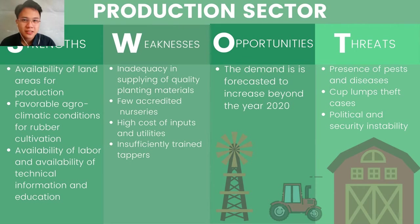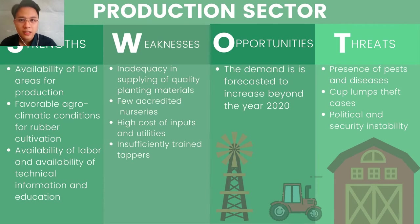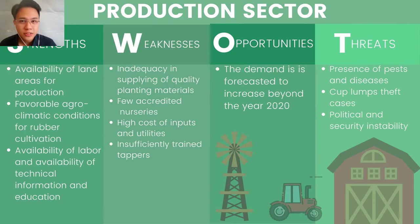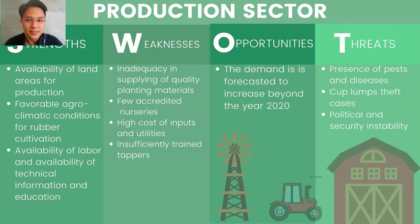In the production sector, strengths include the availability of land areas for production, favorable agro-climatic conditions for rubber cultivation, the availability of labor, and technical information and education. Weaknesses include inadequacy in supplying quality planting materials, few accredited nurseries, high cost of inputs and utilities, and insufficiently trained tappers. An opportunity is that demand is forecasted to increase beyond 2020. Threats include the presence of pests and diseases, cup-lump theft cases, and political insecurity and instability.